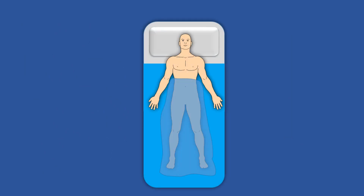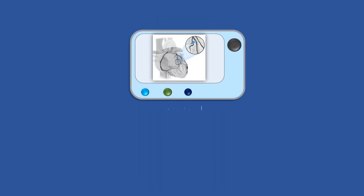Before the angioplasty procedure is performed, a dye is injected, which helps identify the position of the artery narrowing or blockage, using X-ray imaging called an angiogram. Once the blockage has been identified, in some cases the angioplasty is performed soon after, while in other cases the possibility of other treatments is discussed with the patient.